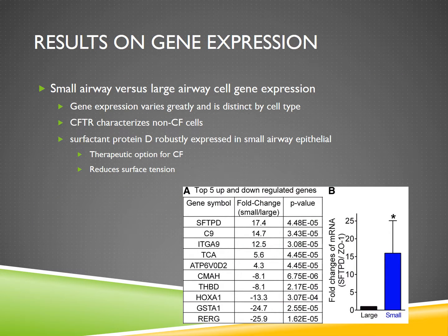The results on gene expression were pretty profound. The small airway versus large airway cell gene expression was very different. As you can see in panel A, for small versus large airways, there are some proteins that were highly expressed in small airway epithelial cells compared to large airway epithelial cells and vice versa. CFTR increased expression characterizes non-cystic fibrosis cells, so healthy cells in small epithelial airways express CFTR at a high level.